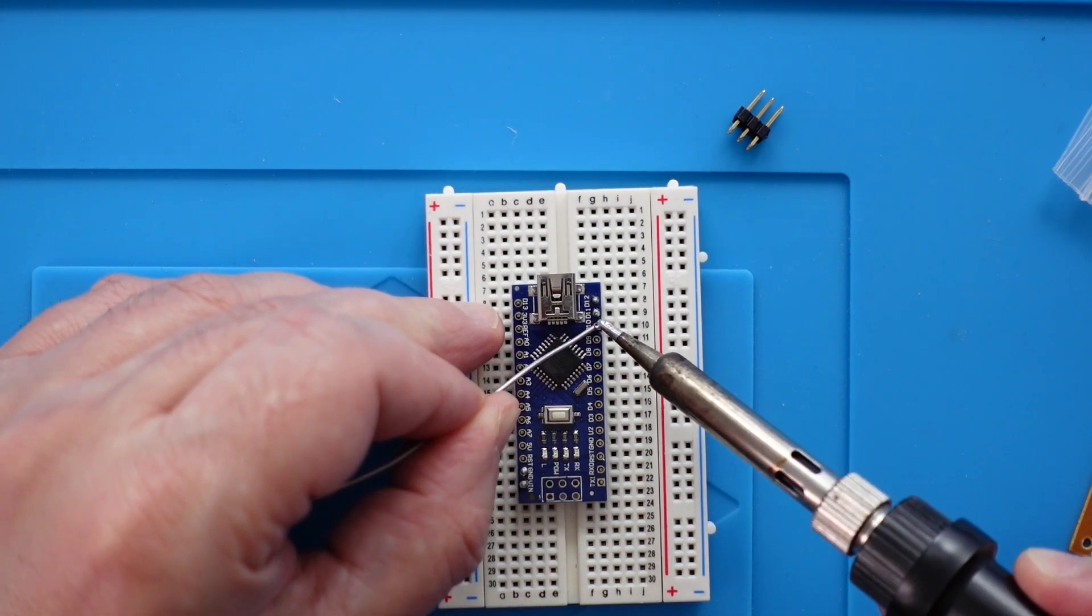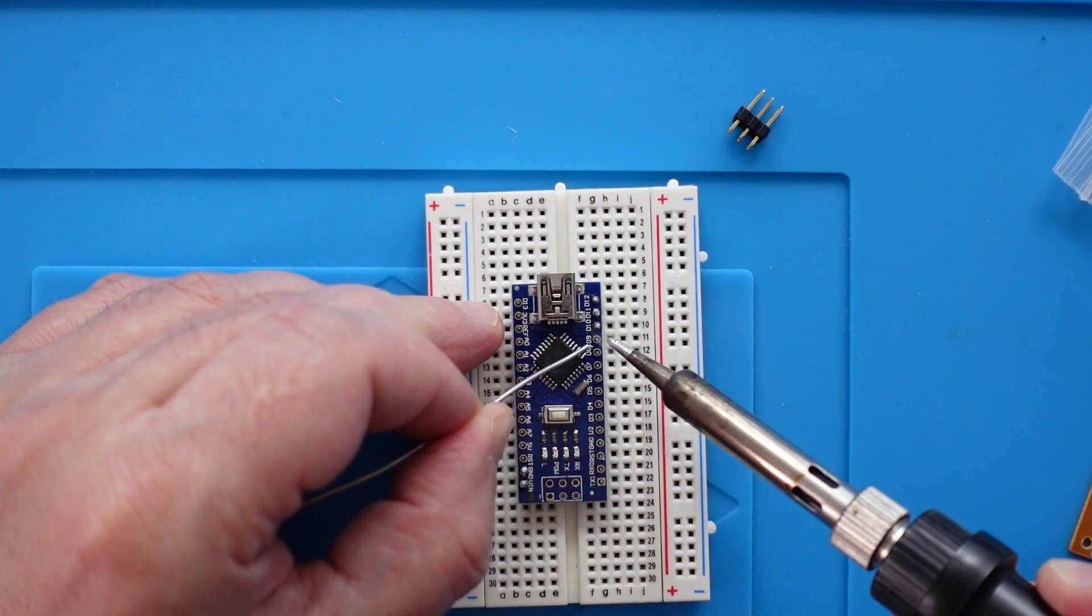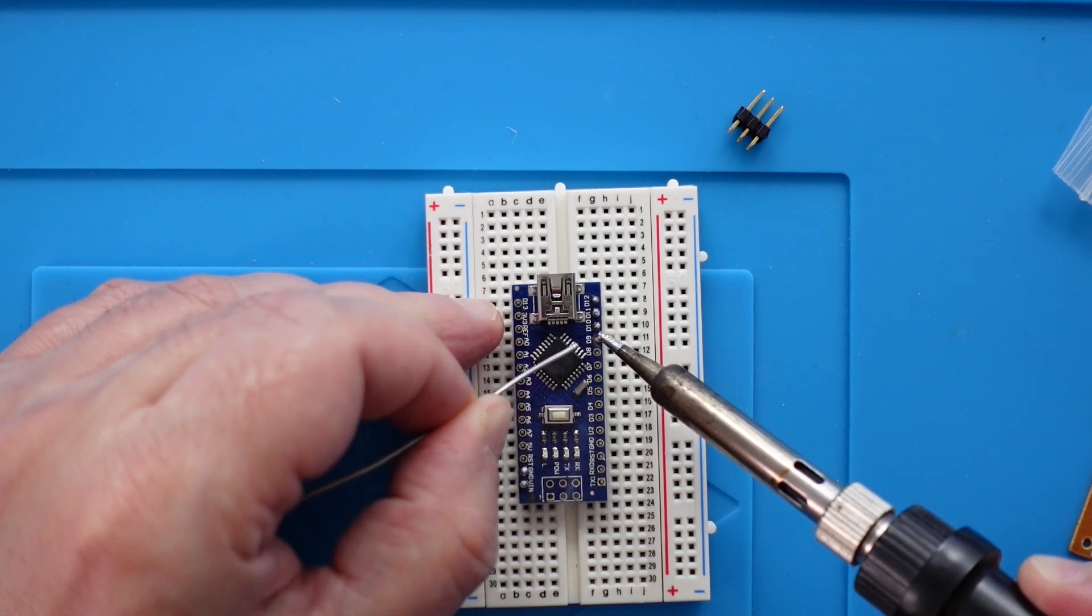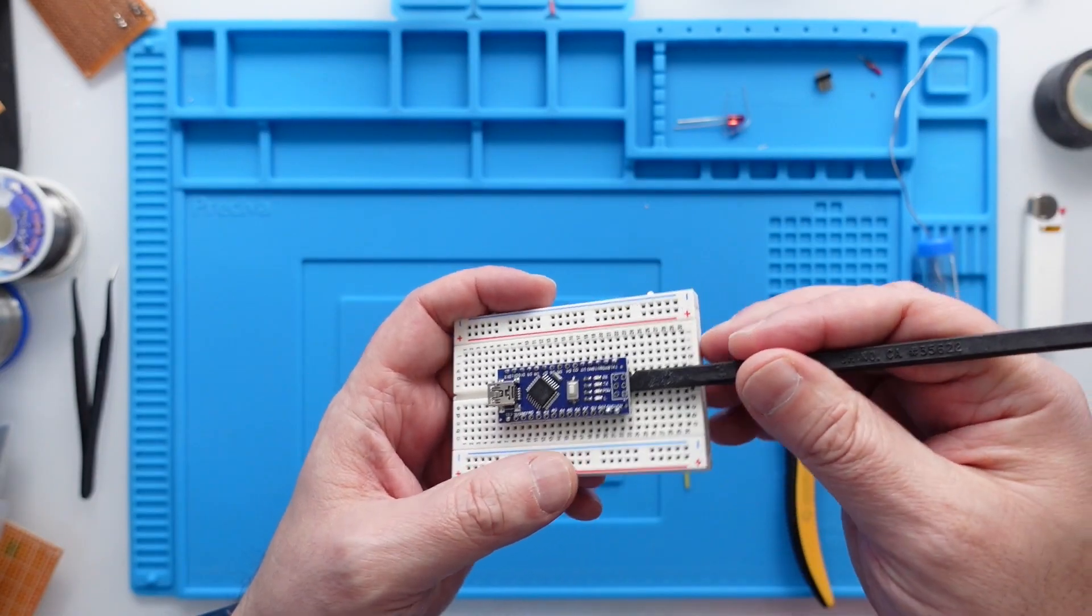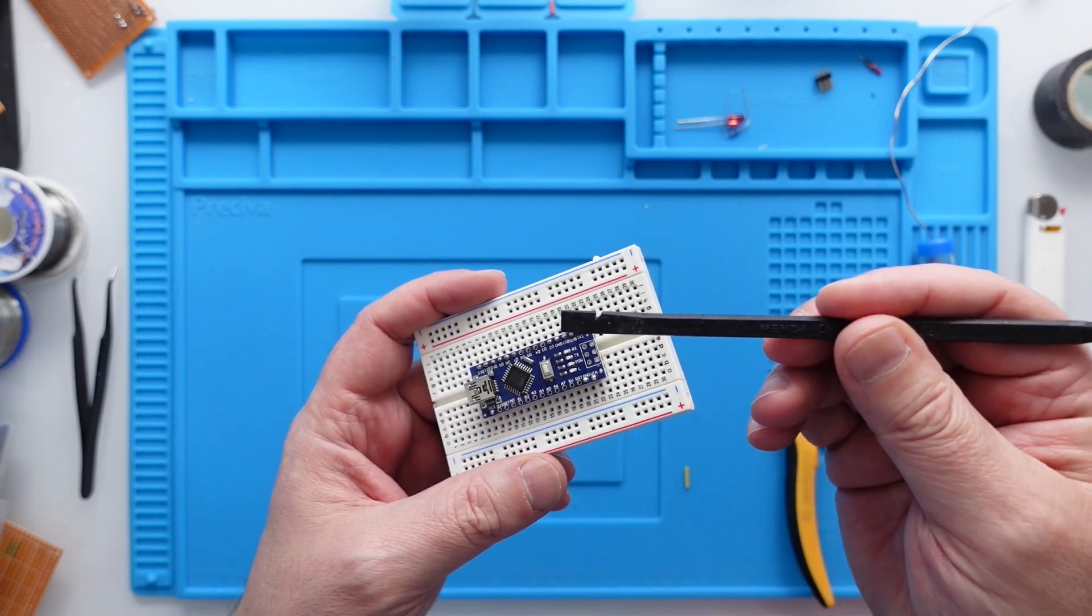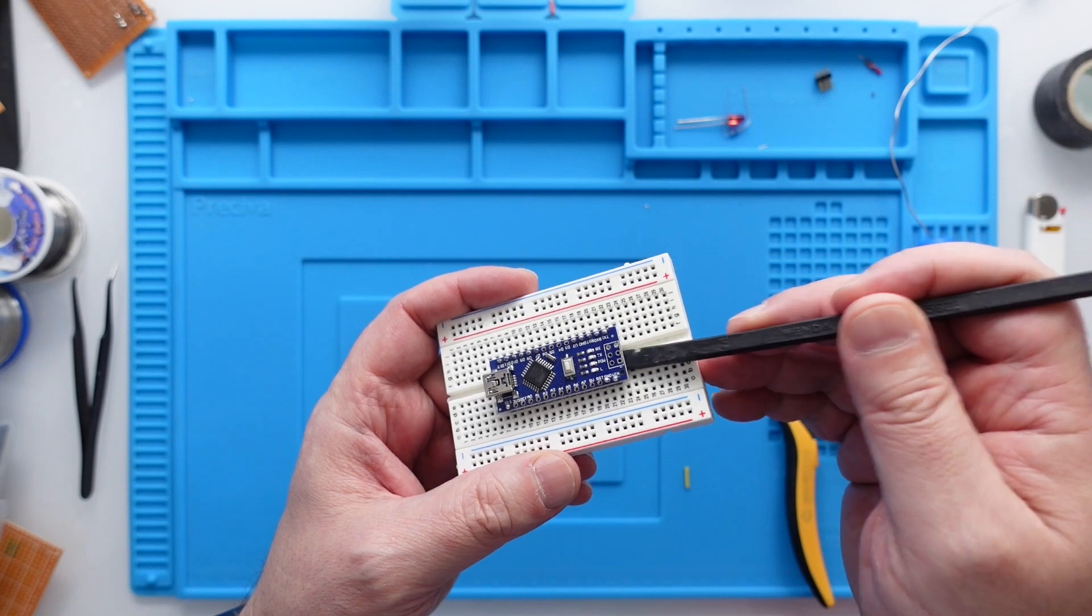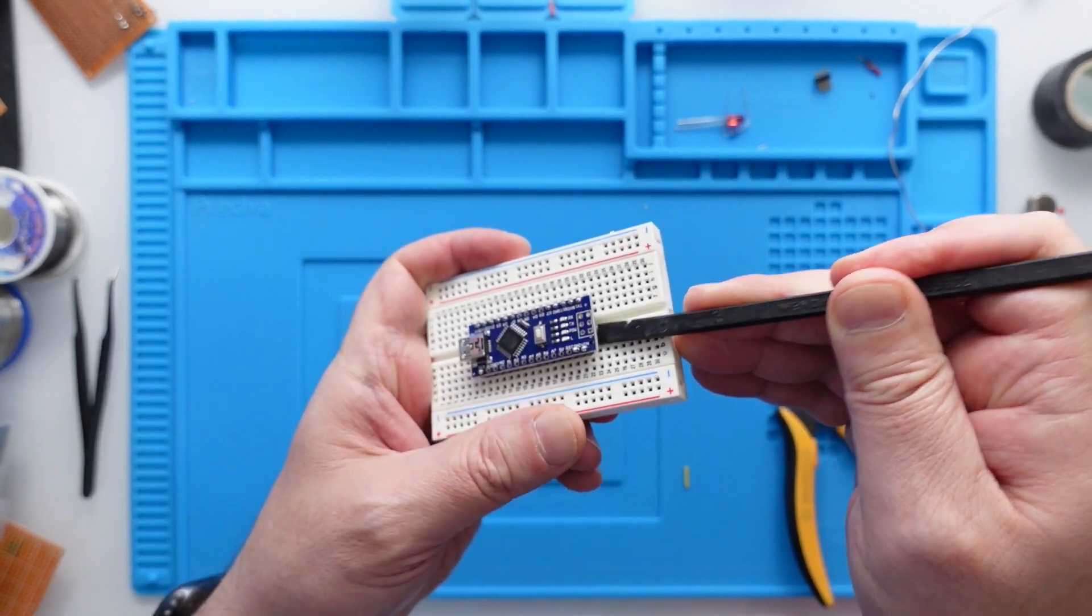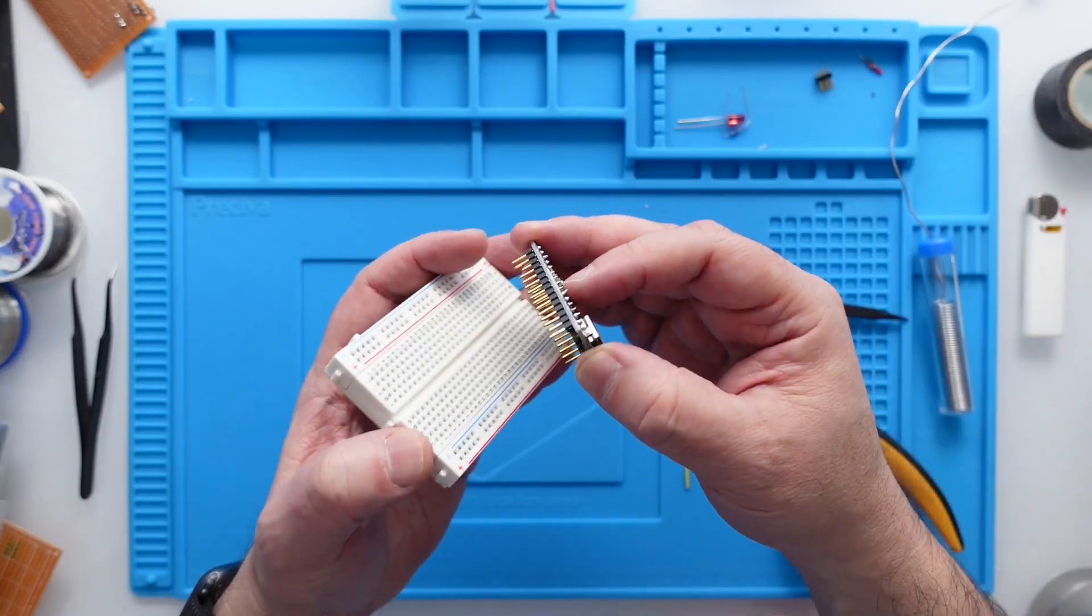Once you're done, if you need to remove this, be careful. I use a nylon spudger. This also doesn't create static, so you don't take the risk of maybe transferring any electricity into it. So gently put it down from one side, gently on the other, and then you take it out.